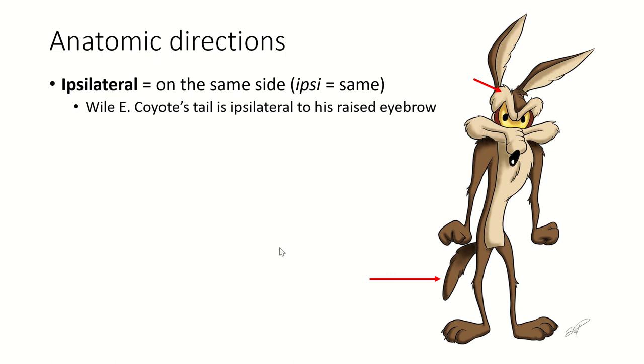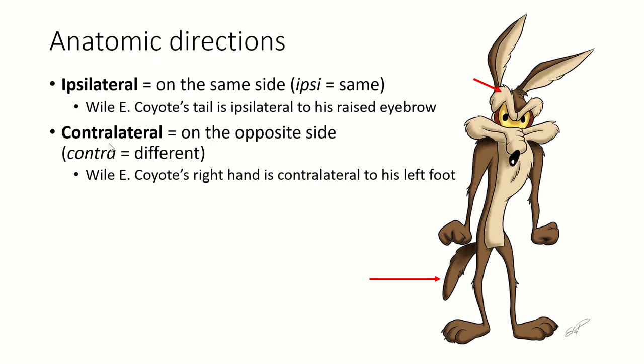Now we have these other two terms that I just love. Ipsilateral means on the same side. Ipsy means same. And contralateral means on the opposite side. Contra is different. So your right hand and right foot are ipsilateral. Your right hand and left foot are contralateral. The hemispheres of your brain control the muscles on the contralateral side of your body, which means that the right side of your brain controls the left side of your body. We don't use ipsilateral very often. Contralateral is more common.